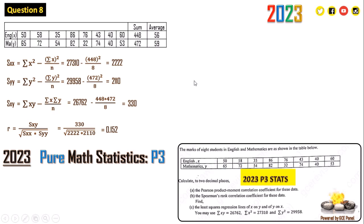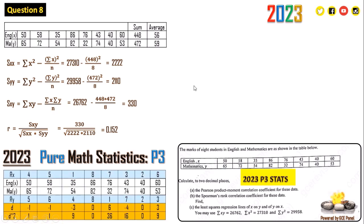Now part b wants us to find the Spearman's rank correlation coefficient for this data. For Spearman we are going to make a table like this and we rank the data. This is English, these are the marks for English and these are the scores for Maths. For English we are going to rank the scores from the smallest to the biggest. The smallest score is 35, the next one is 40, 43, then 50, 58, 60, 76, and 86.